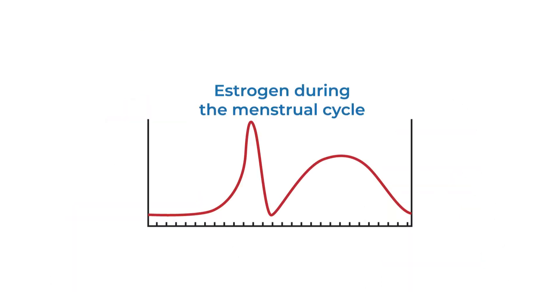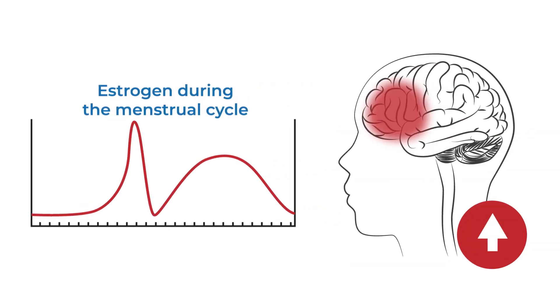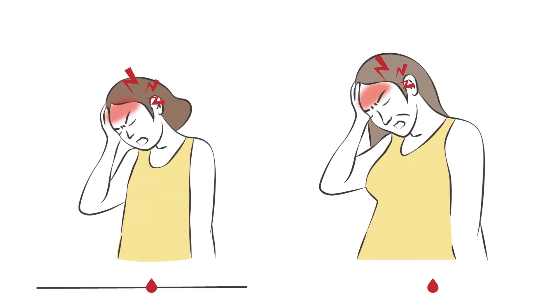Researchers believe that fluctuations in estrogen make the brain more susceptible to migraine. Many female patients experience an increase in the number and severity of attacks around puberty and perimenopause when estrogen fluctuations worsen.